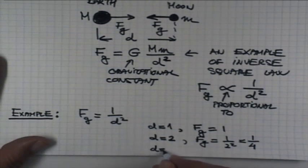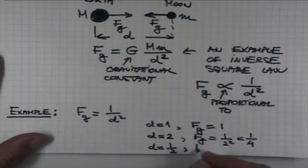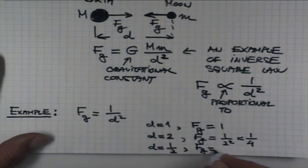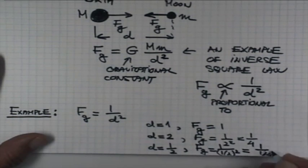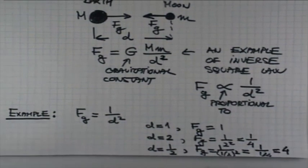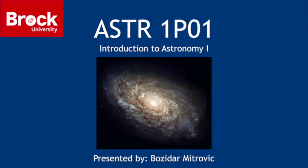On the other hand, if I halve the distance, then the force of gravity is 1 over 1 half squared. That is 1 over 1 quarter, and how many quarters do I have in a whole? Four. So, the force is increased by a factor of 4.